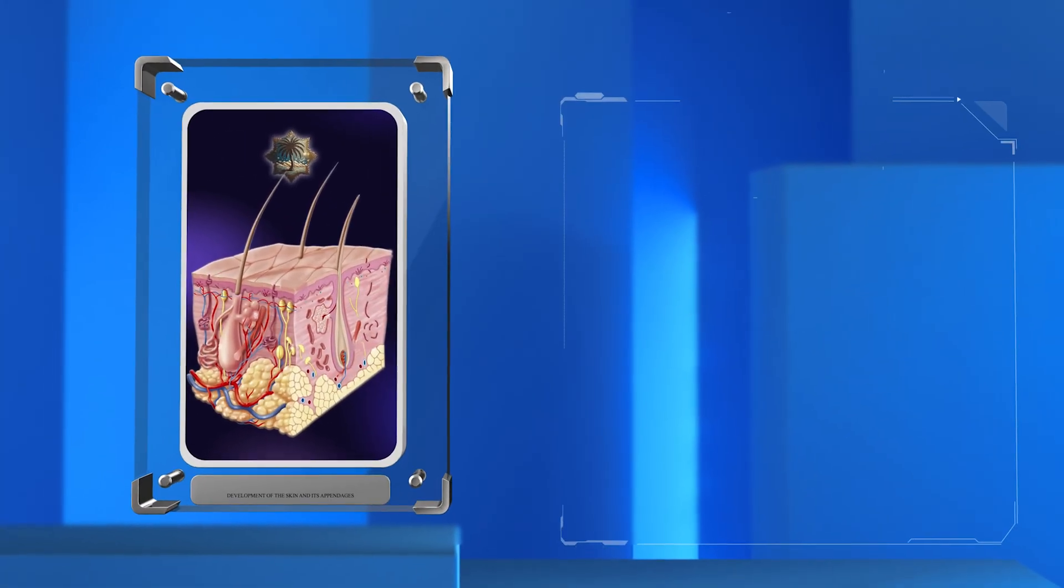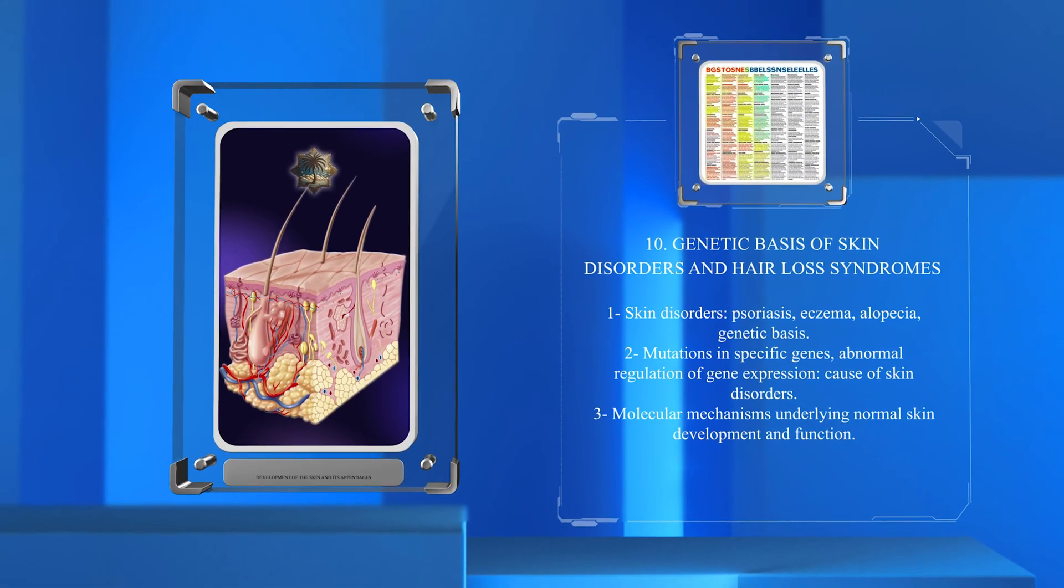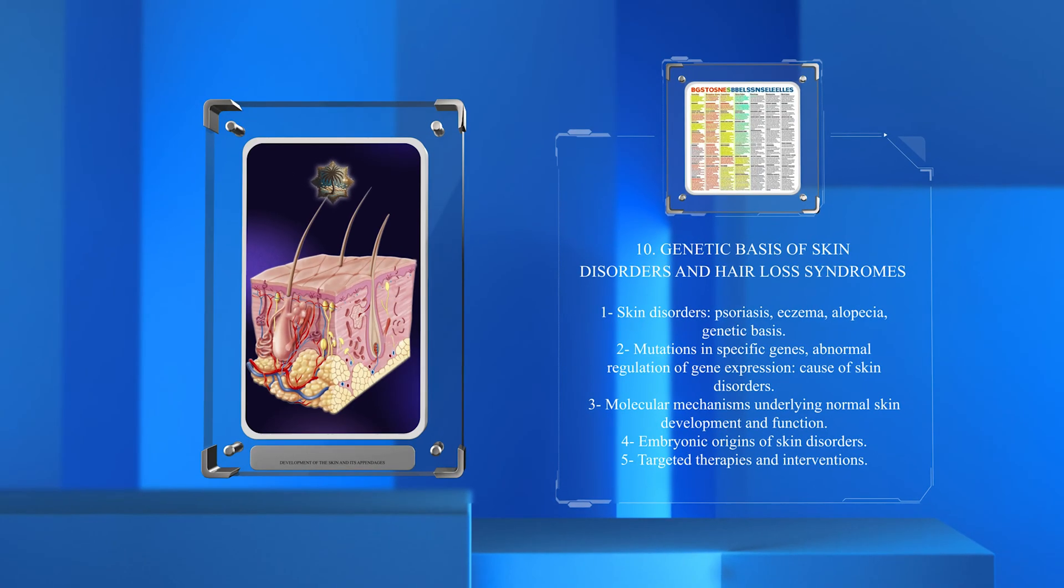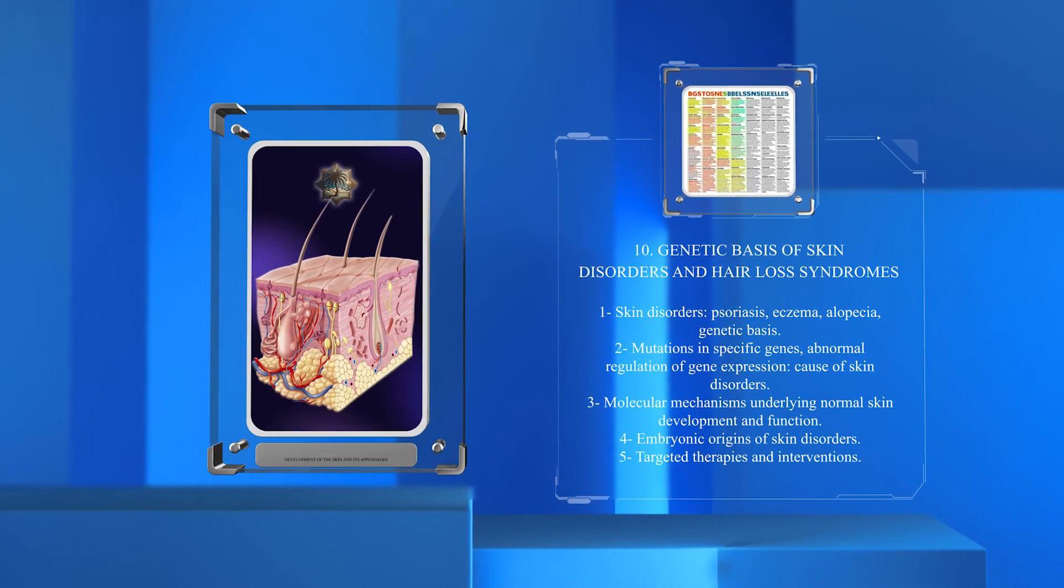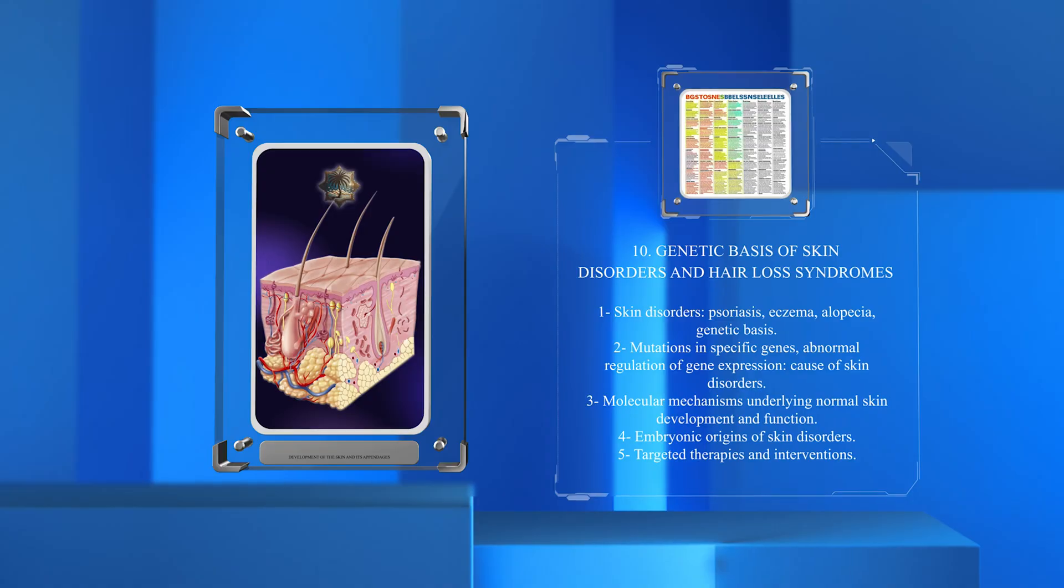Many skin disorders, including psoriasis, eczema, and alopecia, have a genetic basis. These disorders can arise from mutations in specific genes or from abnormal regulation of gene expression during embryonic development.